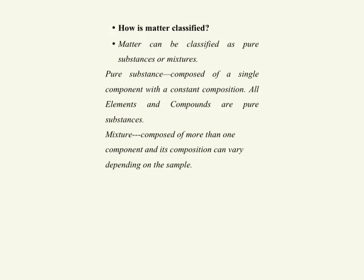All matter can be classified as pure substances or mixtures. A pure substance is composed of a single component with constant composition, regardless of the size or origin of the sample. It cannot be broken down into other pure substances by any physical change.